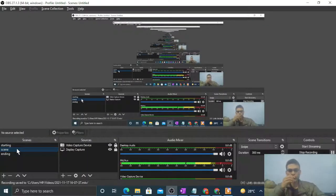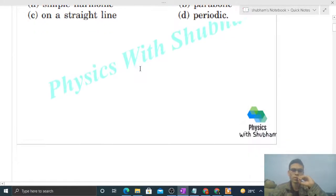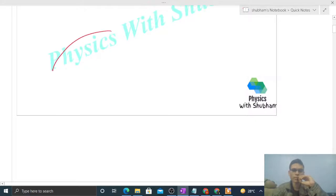Okay, hi everyone. Today let's discuss this interesting problem. It says suppose a tunnel is dug along a diameter of the Earth. A particle is dropped from a point at distance h directly above the tunnel. The motion of the particle as seen from the Earth, we need to find.